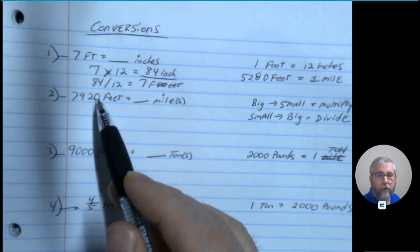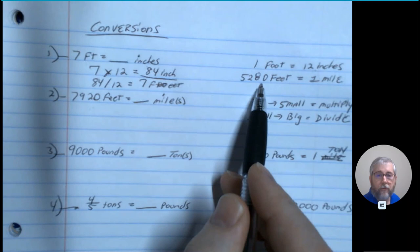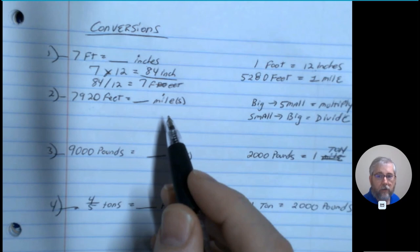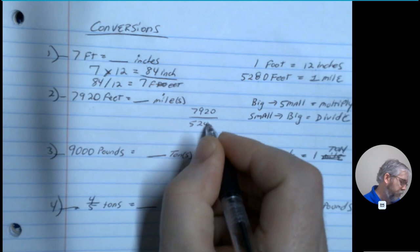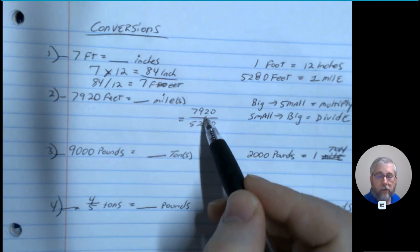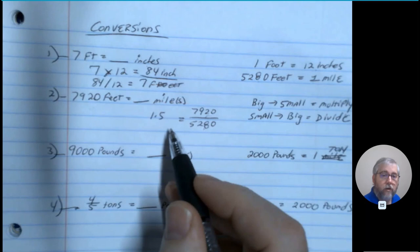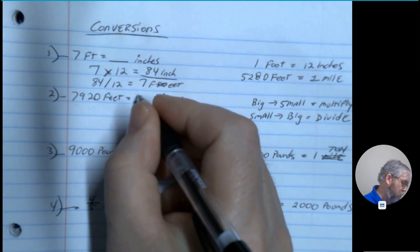Let's look at this: if we're given 7920 feet and I need to know how many miles that is equal to, I know that 5280 feet is equal to one mile. I have a smaller unit going to a larger unit, so it's going to be a division problem. So I'm taking 7920 divided by 5280, which gives me 1.5. So 7920 feet is equal to 1.5 miles.